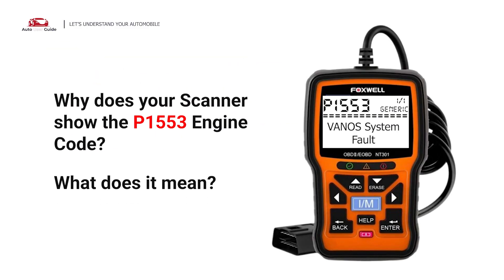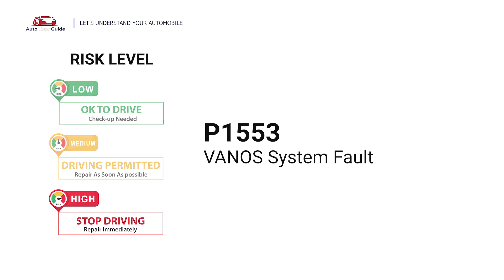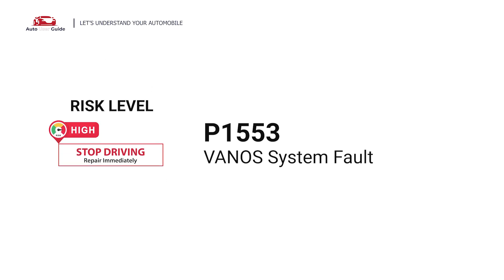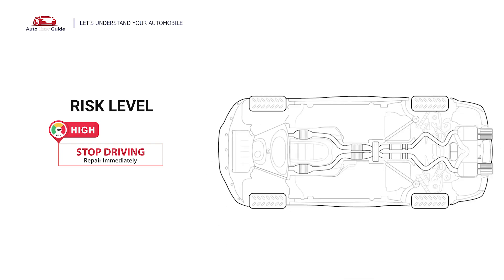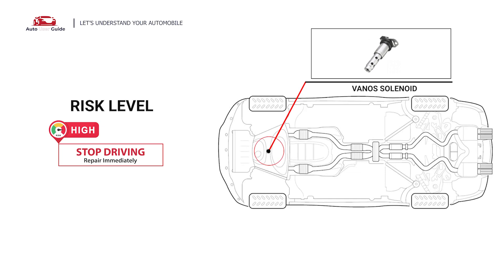Why does your scanner show the P1553 engine code? What does it mean? P1553 is a diagnostic trouble code for a VANOS system fault. This engine code indicates that, depending on the vehicle manufacturer, it often signifies a VANOS system fault, potentially related to